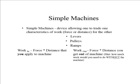A simple machine is defined as a device that allows you to trade one characteristic of work. Let me remind you, work is force times distance. So you can trade force for distance, or distance for force. The three simple machines that we're going to look at are levers, pulleys, and ramps.